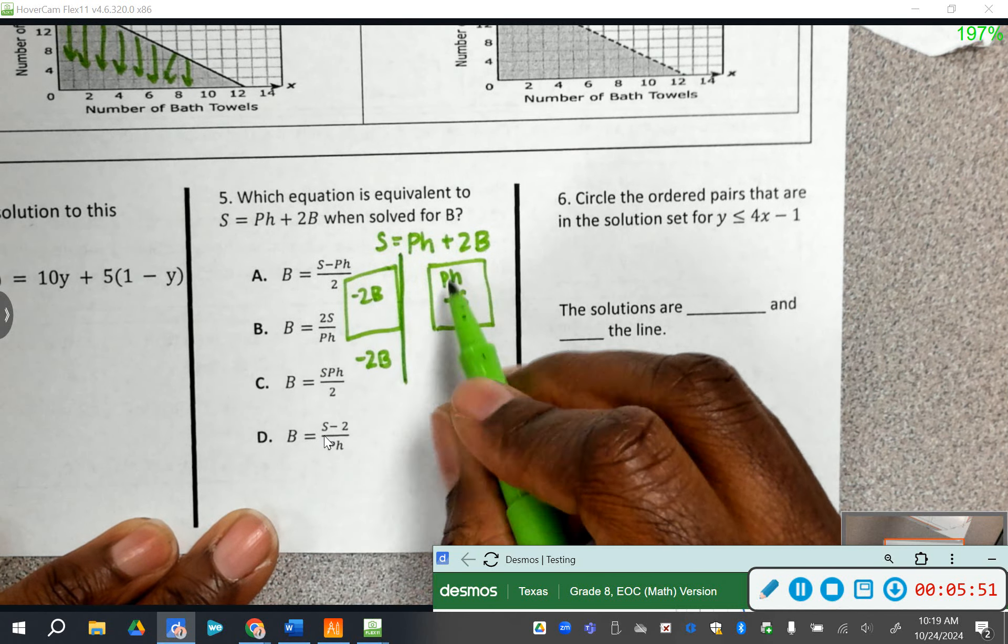You need to know what this symbol means. This symbol, we already talked about it right here. It means that the solutions are, what is this symbol? Less and equal to the line, alright? So, we're going to start plugging these points in Desmos also to see if this point is less than or equal to the line, it is in my solution set.